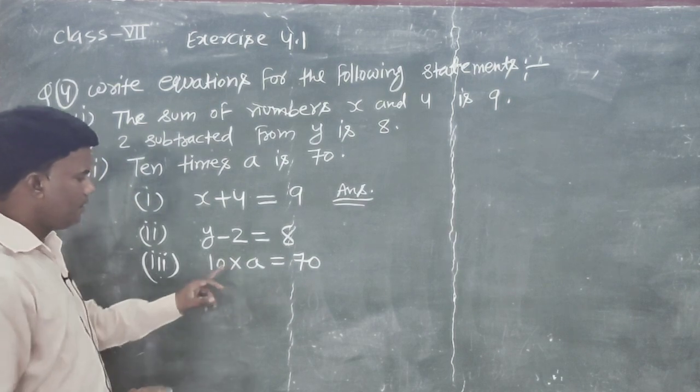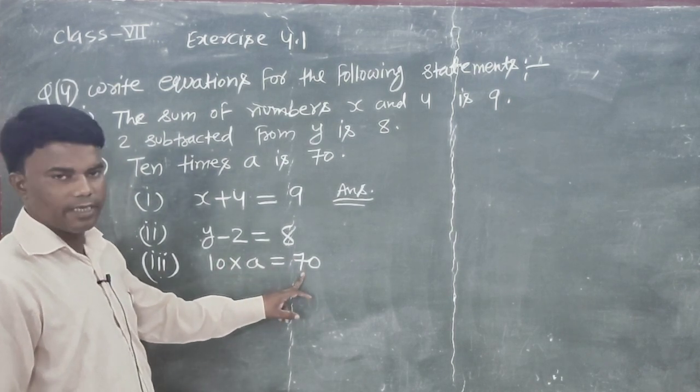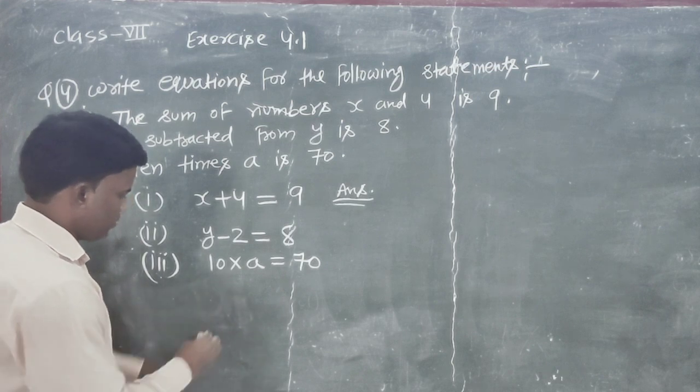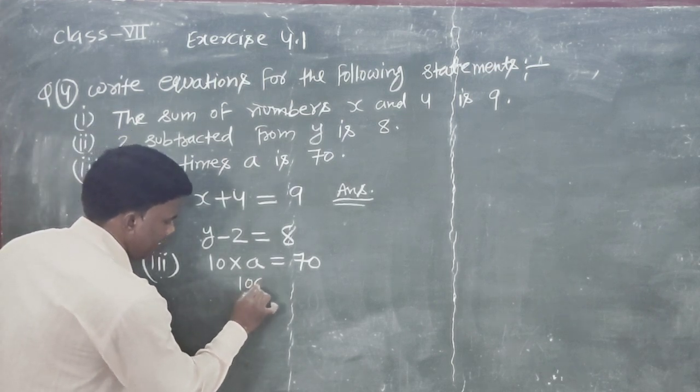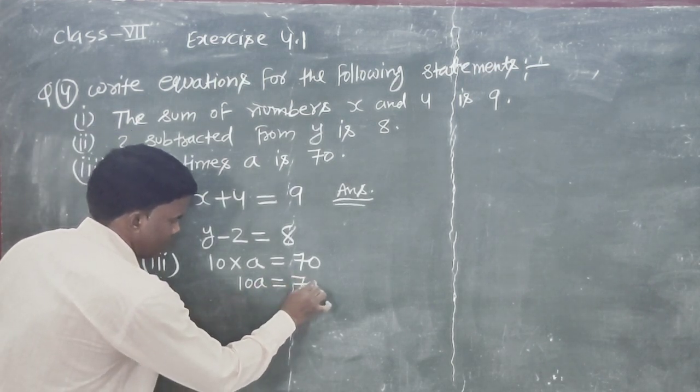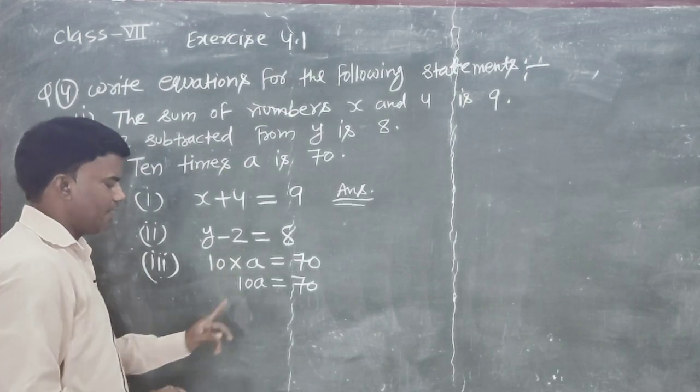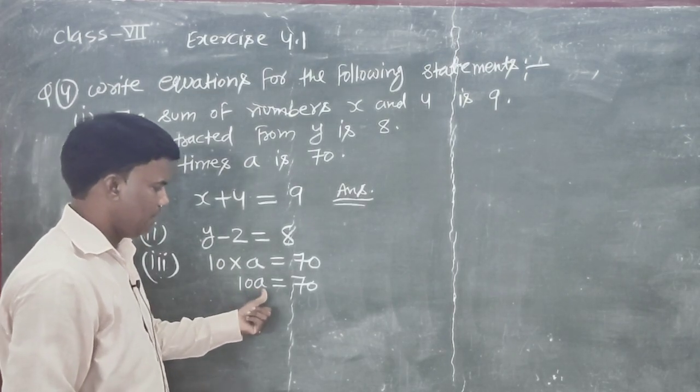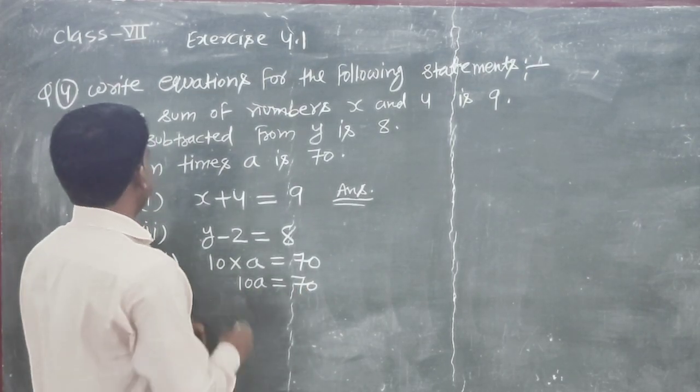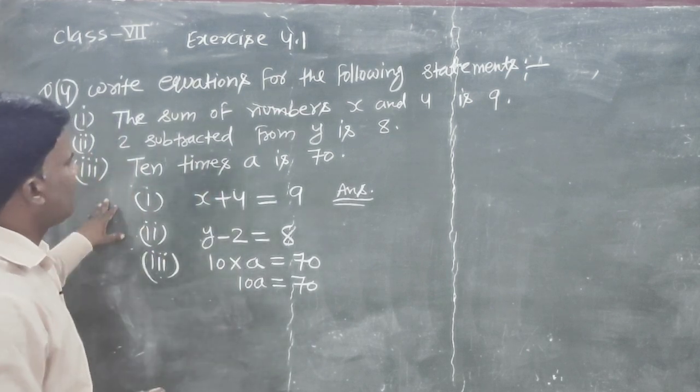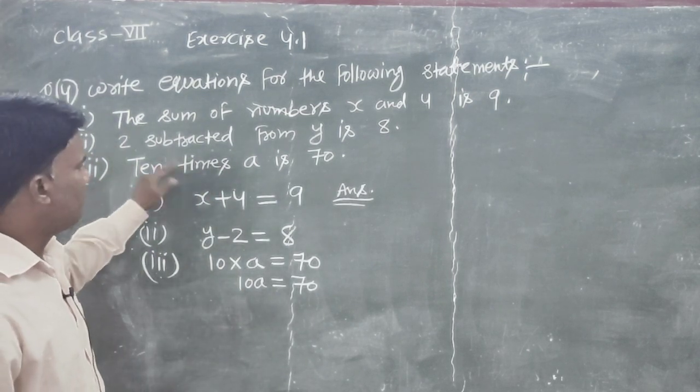So, 10 times of a is equal to 7. So 10 times of a is equal to 7. So, back in the part 2, question no. 4 is equal to the question.